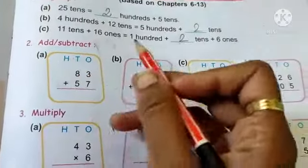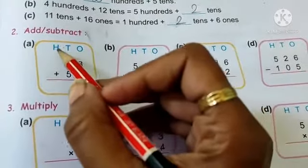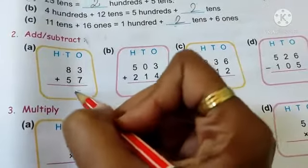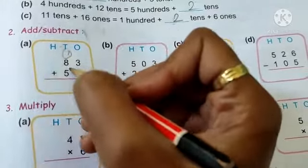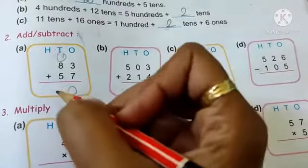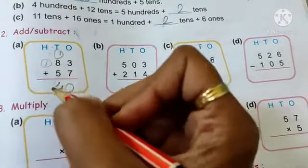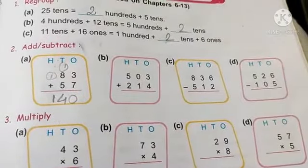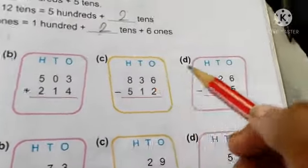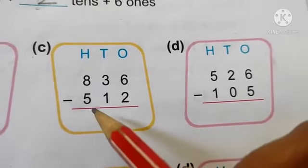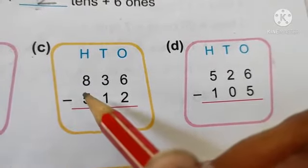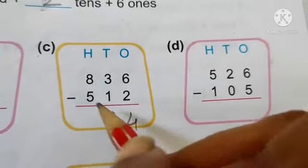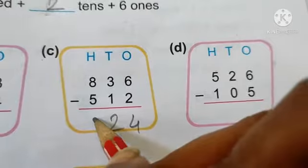Add or subtract: one hundred eighty-three plus fifty-seven — seven plus three is ten, write zero carry one; eight plus five is thirteen plus one is fourteen, write four carry one; so the total is two hundred forty. Subtract 512 from 836 — six minus two is four, three minus one is two, eight minus five is three — answer is three hundred twenty-four.